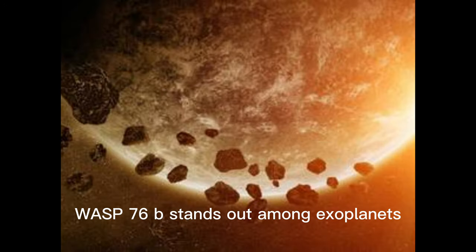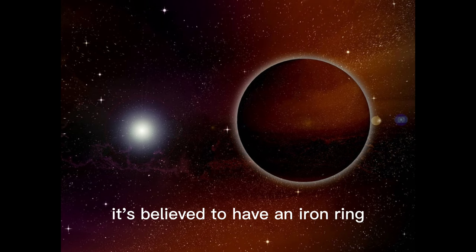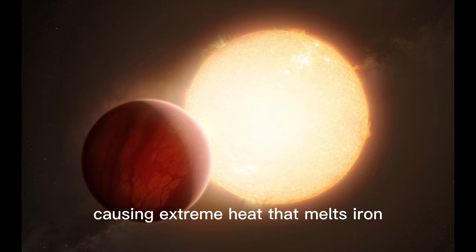WASP-76b stands out among exoplanets. Discovered in 2013, it's believed to have an iron ring due to its proximity to its star, causing extreme heat that melts iron.